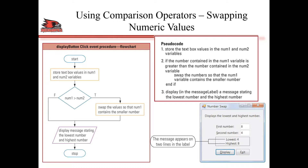On the right side we have the pseudocode. Basically, store the textbox values in num1 and num2, and if num1 is greater than num2, then swap the numbers so that num1 now contains the smaller number. Then display in a label called message label a message stating the lower number first and then the higher number.